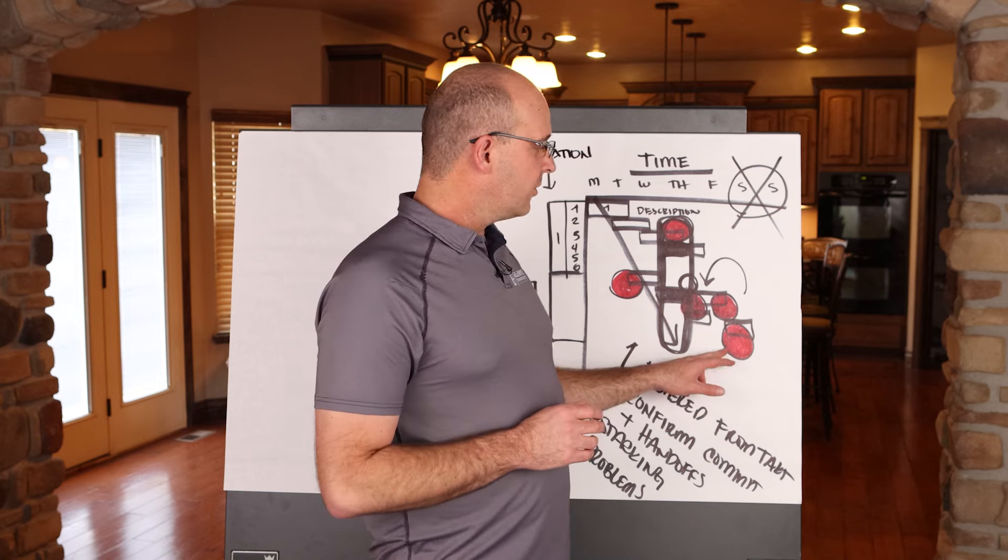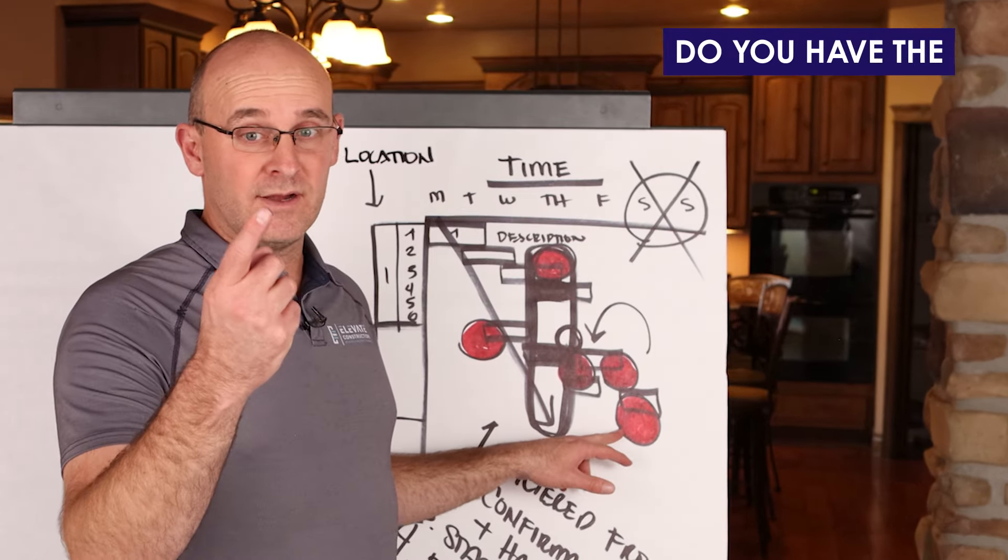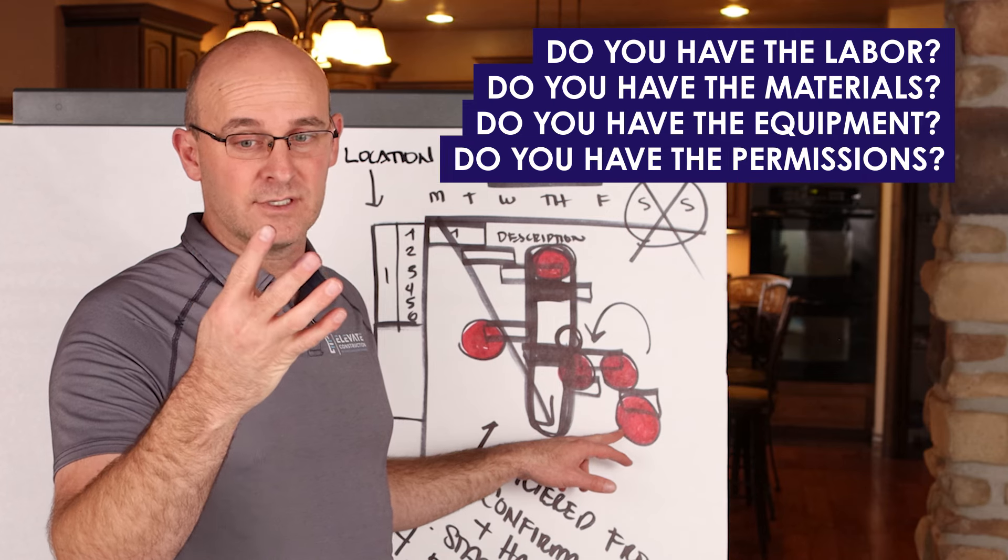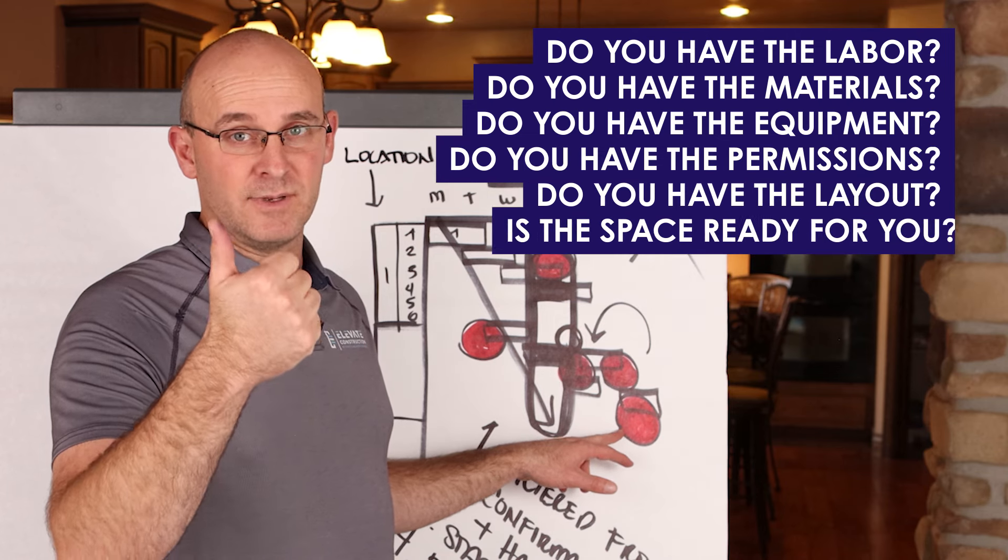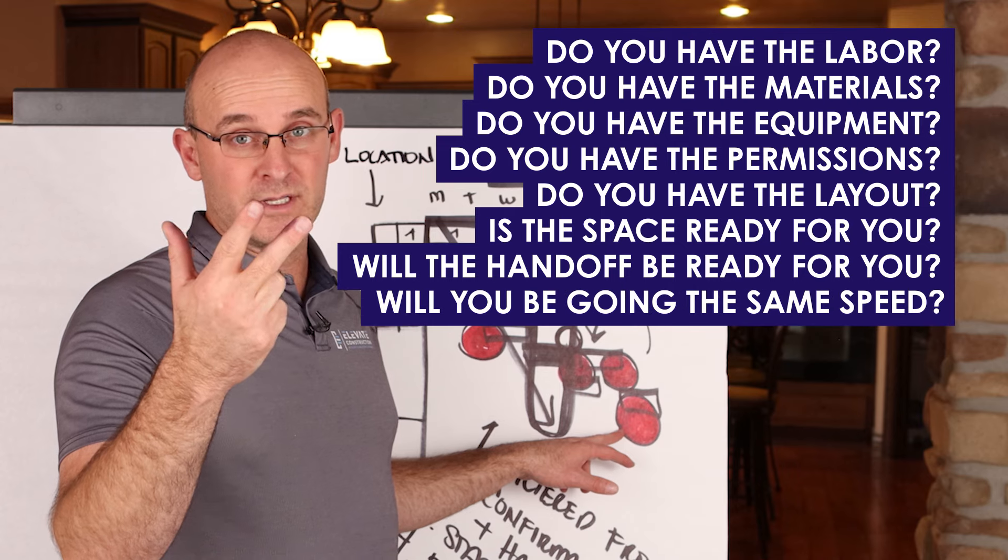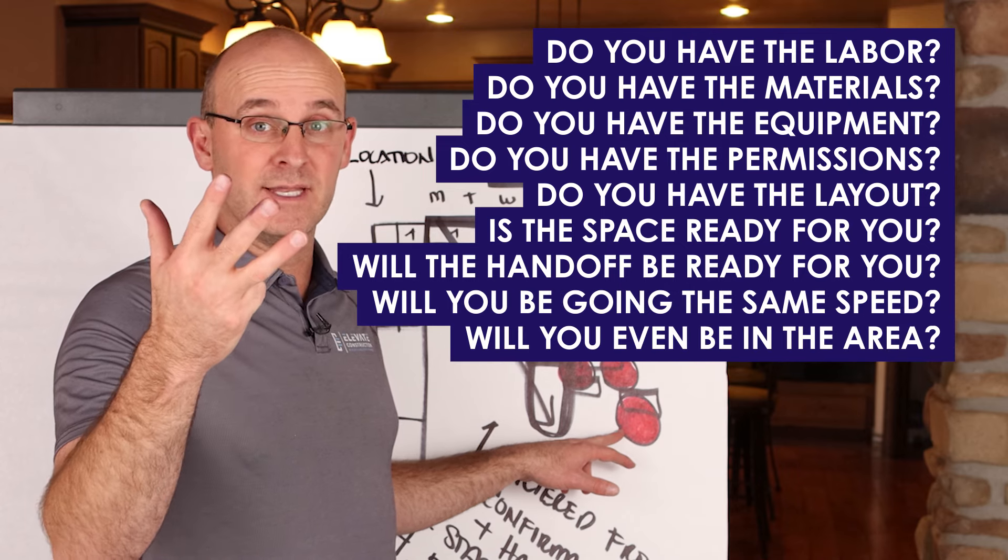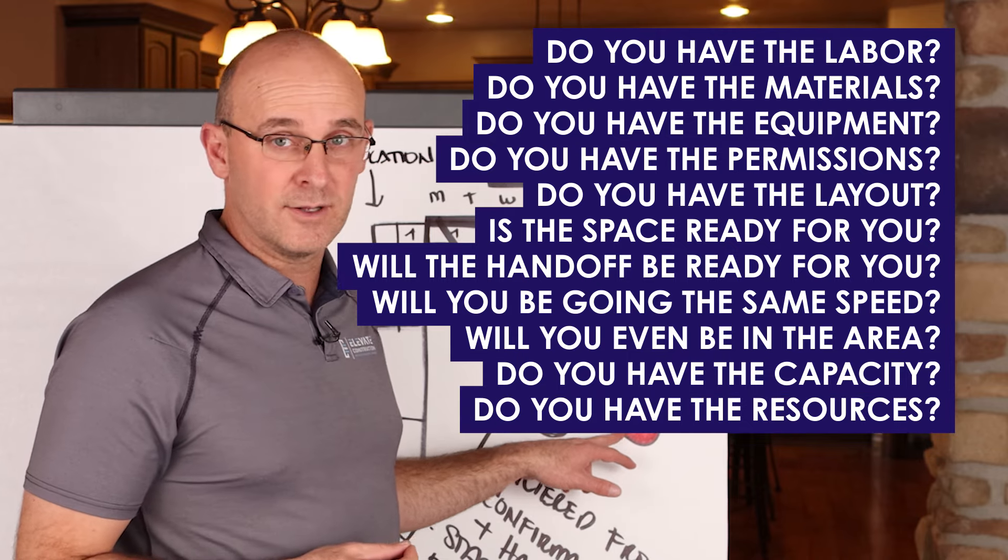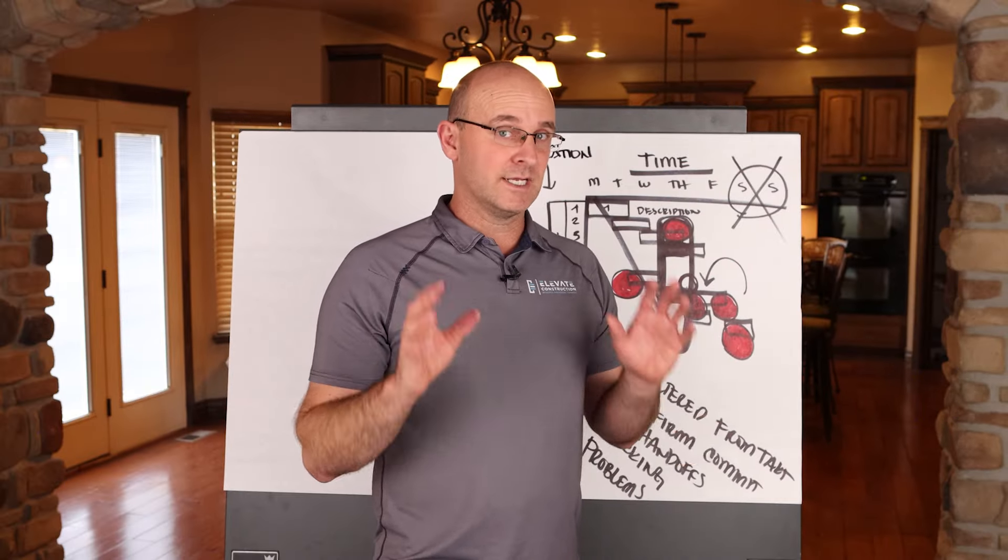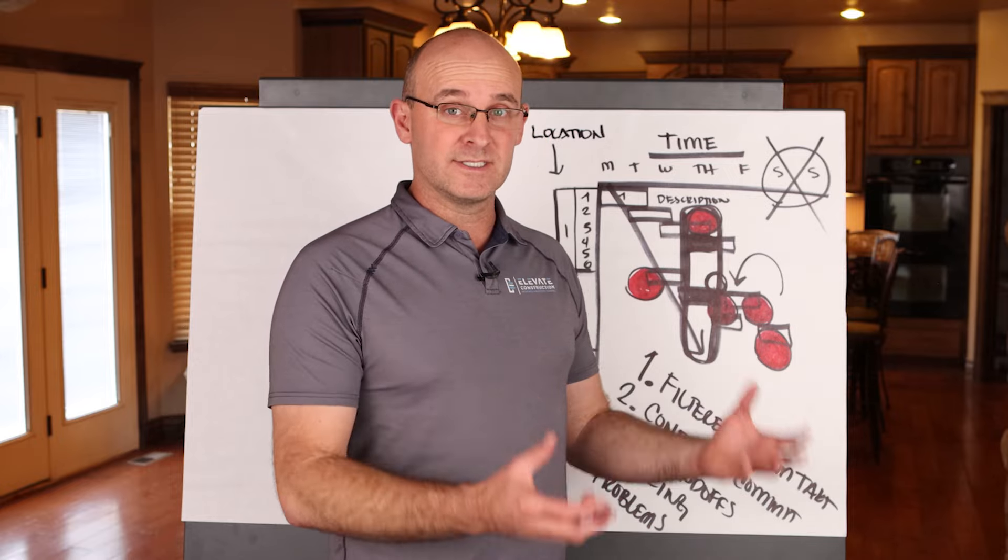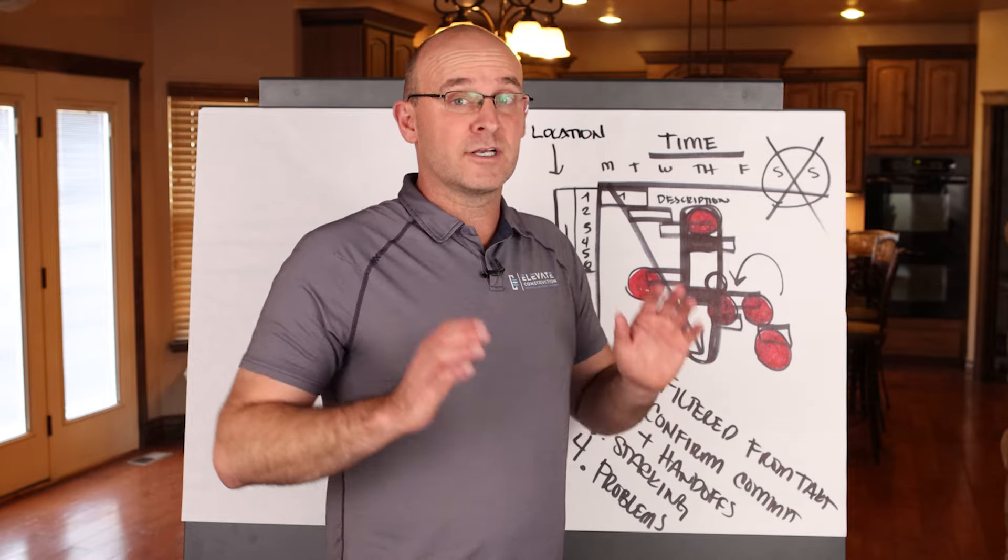When you do that, you're going to give them some parameters. Do you have the labor? Do you have the materials? Do you have the equipment? Do you have the permissions? Do you have the layout? Is the space ready for you? Will the handoff be ready for you? Will you be going the same speed? Will you even be in the area? Do you have the capacity? Do you have the resources to accomplish this? And if you don't, it's a problem. And then problems become roadblocks. Roadblocks become things that we solve. Solved roadblocks become flow.